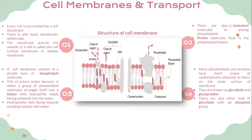Every cell is surrounded by a cell membrane, and there are also many membranes within cells. The membrane around the outside of the cell is called the cell surface membrane or plasma membrane. There are also cholesterol molecules among phospholipids, and protein molecules flow in the phospholipid bilayer. The cell membrane consists of a double layer of phospholipid molecules, with hydrophilic heads facing outward into the water and hydrophobic tails facing inward, avoiding contact with water.